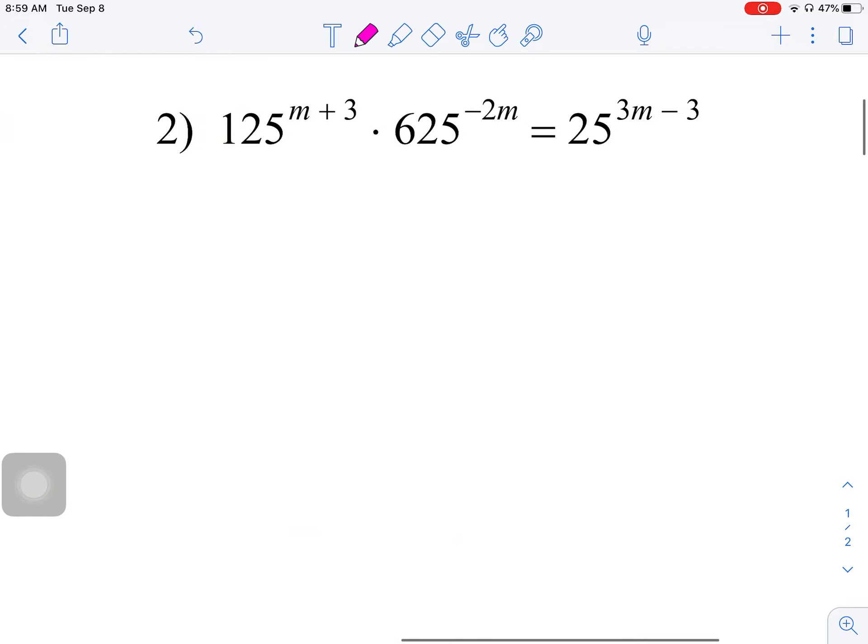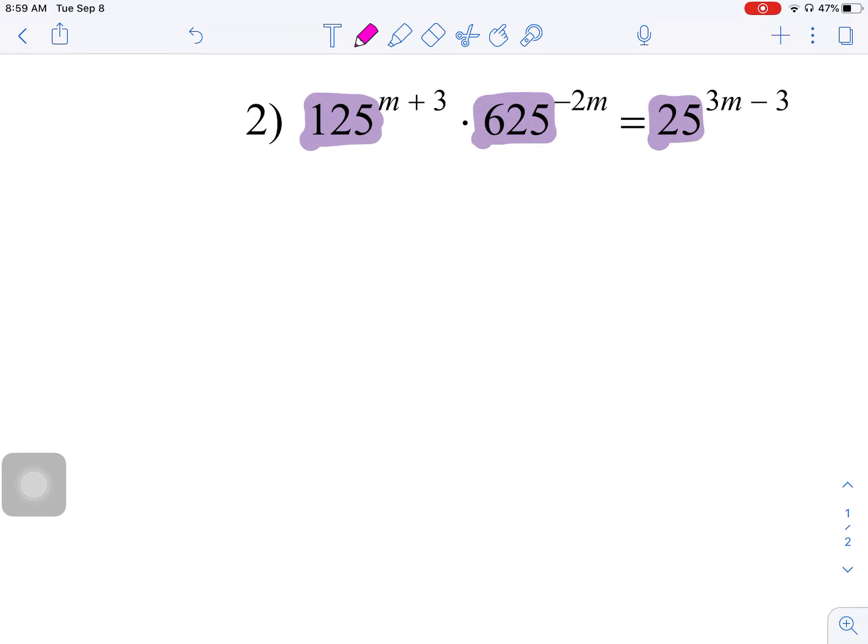All right, number 2. Again, we have three bases. We have 125 here, we have 625 here, and we have 25 here. Now, I've done these a few times. My brain kind of starts processing through a few things, and immediately, I know my common base is actually going to be the number 5.